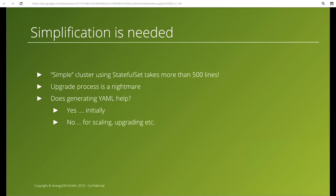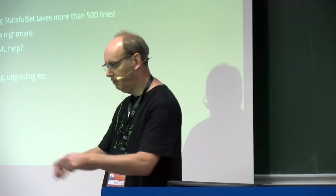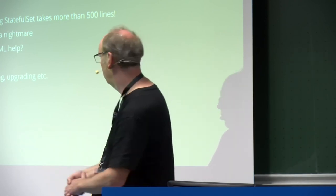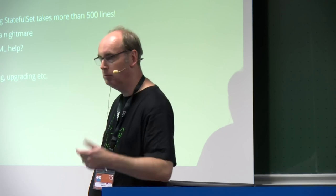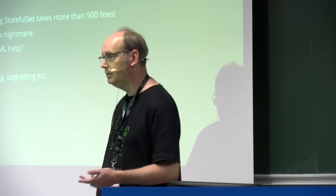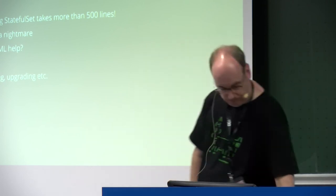What we needed is simplification. A simple cluster using stateful sets is already more than 500 lines. The upgrade process I don't even want to think about. The first question we asked — and that we saw people were using — is: why don't we create a script that actually creates the YAML for us? You can do that. It works great initially: create a script, say take this version, I want so many of this and that. It creates a set of YAML files, you deploy them, you're done. Until you need scaling or upgrading — then you are stuck with exactly the same problems as before.